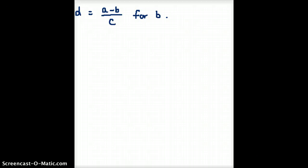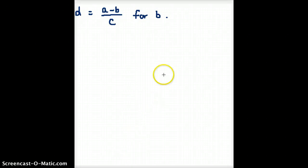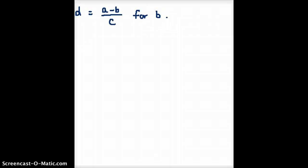Hello. Today we're going to solve D equals A minus B over C for B. So our goal here is to get the B completely alone. Our goal here is to take this B and get B on one side and everything else over on the other side. So this is our goal.